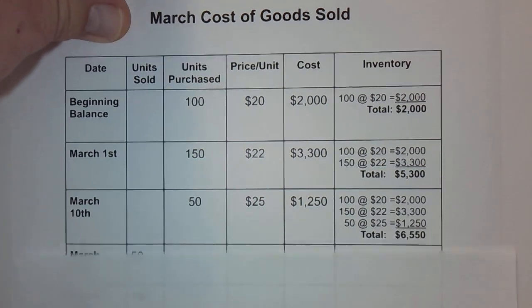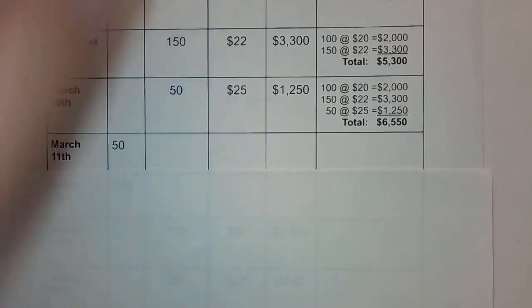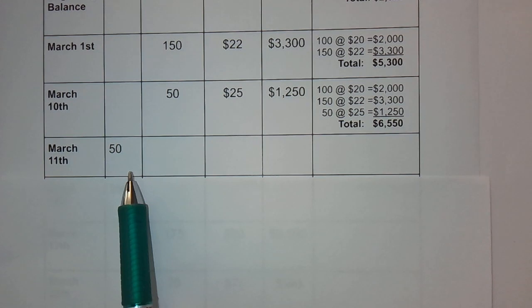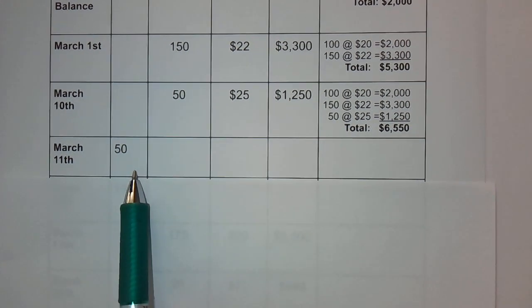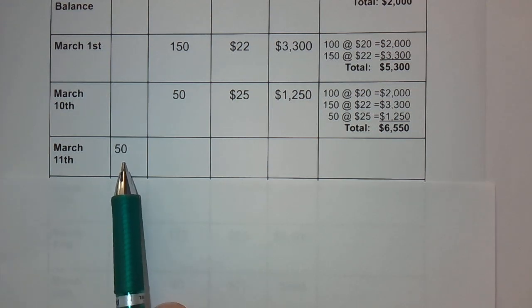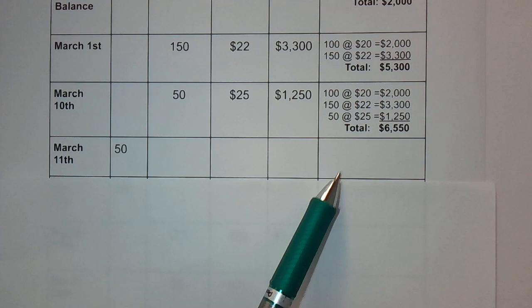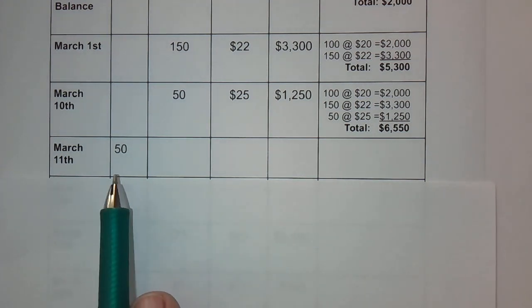Now it's time to start selling. On March 11th we sell 50 units. For calculating cost of goods sold, it doesn't matter how much the units were sold for — for example, $100 per unit. That sales price is important for gross margin and profit, but we're going to ignore it for now and focus on cost of goods sold and how much inventory remains.